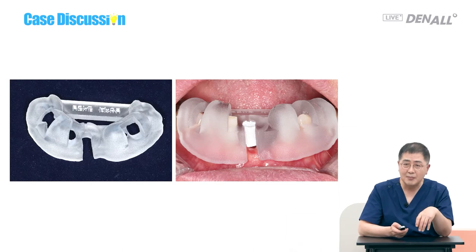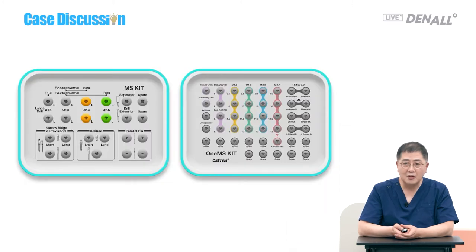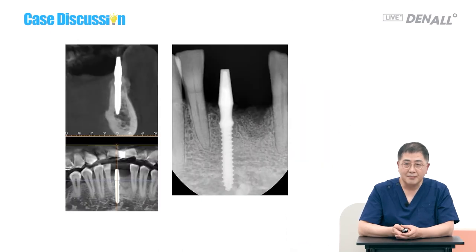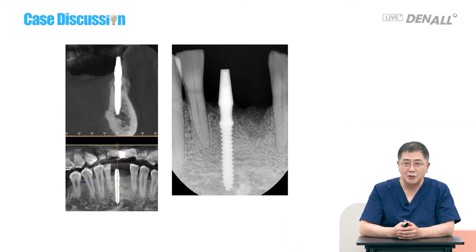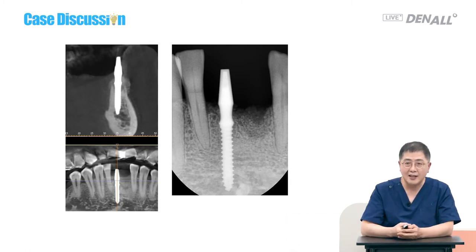On MS implant, they can be placed with a couple of drills. So if you make a mistake in the first drilling, you cannot proceed — we designed with a guide and it is confirmed. The condition was favorable buccolingually, so it is placed at the center. Manually, it cannot be placed like that. 2.5 by 13 — I don't use 3.0 because 2.5 is good enough.